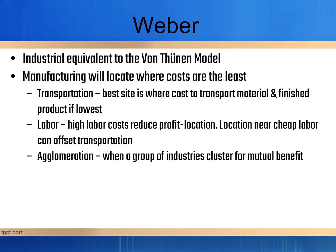The most important model for industry is Alfred Weber's Least Cost Theory. This is all about where manufacturing is going to locate — where you put your factory in order to make the most amount of money. Weber says there are three things to take into account: transportation, labor, and agglomeration. The best site for your factory is where the cost to transport materials and finished products is lowest, depending on whether you're a bulk gaining or bulk reducing industry. Higher labor costs reduce profit, so locations near cheap labor can offset transportation costs, especially for goods that are cheap to transport like textiles. Agglomeration is when a group of industries cluster together for mutual benefit, which can also factor into where you would want to put your factory.